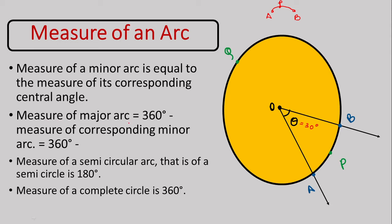For the measure of a major arc, we know the whole circle measures 360 degrees. You subtract the value of the minor arc from 360 degrees. So if the minor arc is 30 degrees, the major arc will be 360 minus 30 degrees, which gives 330 degrees. For a semicircular arc — when a circle is cut exactly into two halves — each arc, AXB and AYB, measures 180 degrees. The measure of a complete circle is 360 degrees.